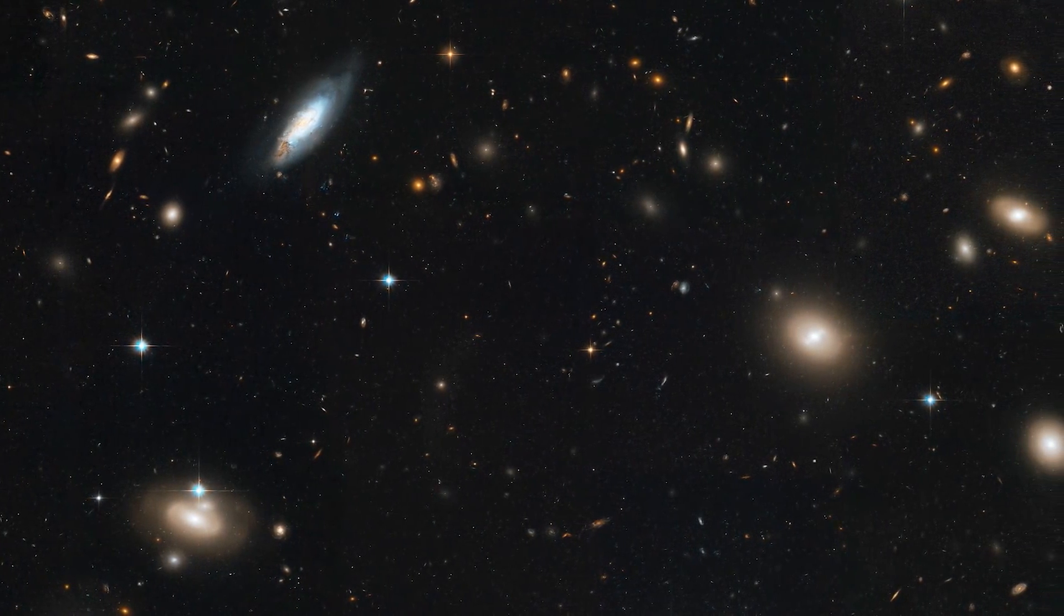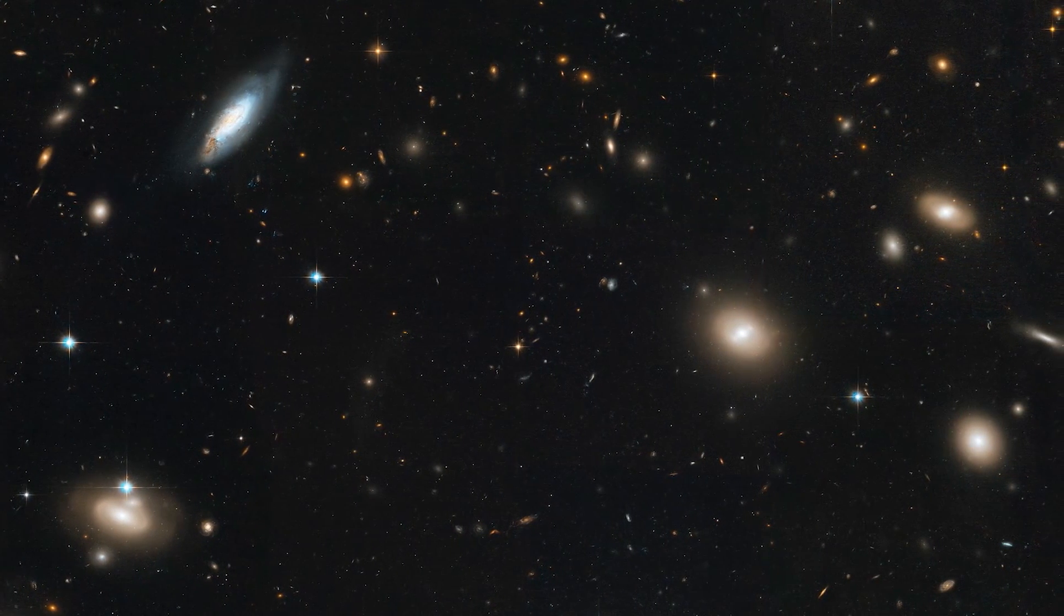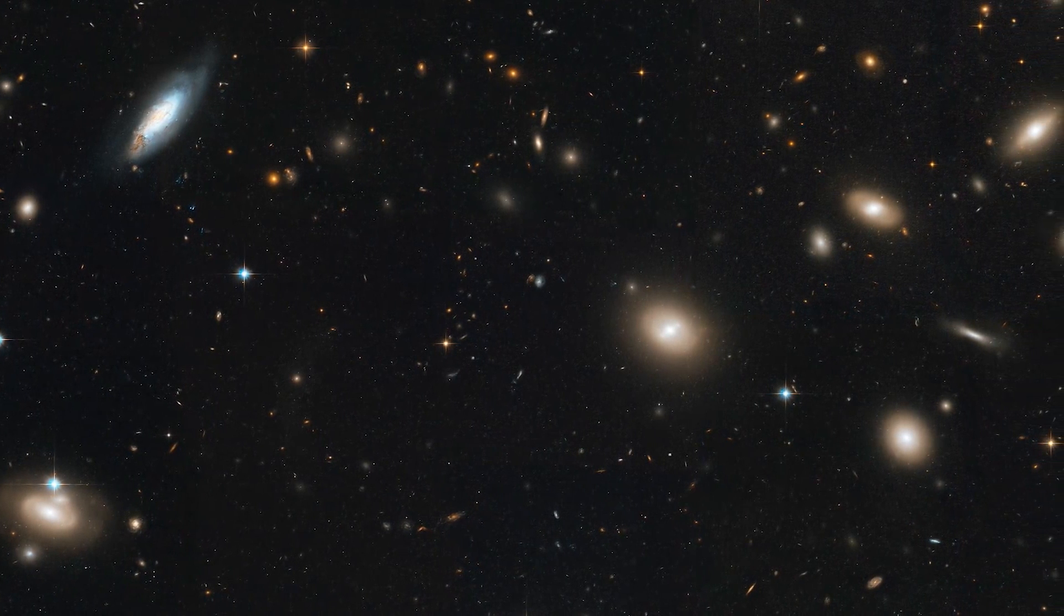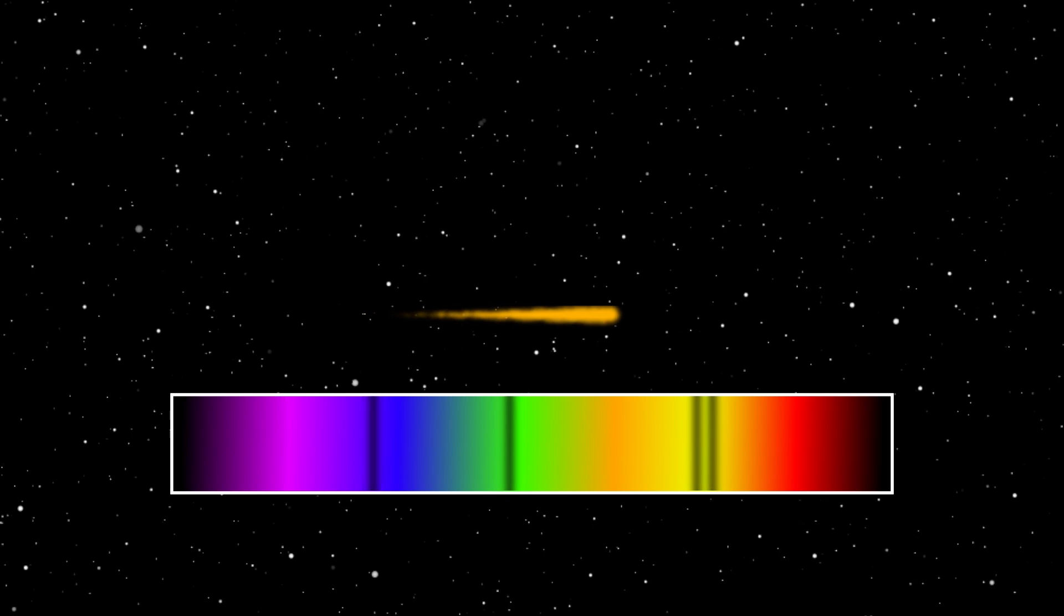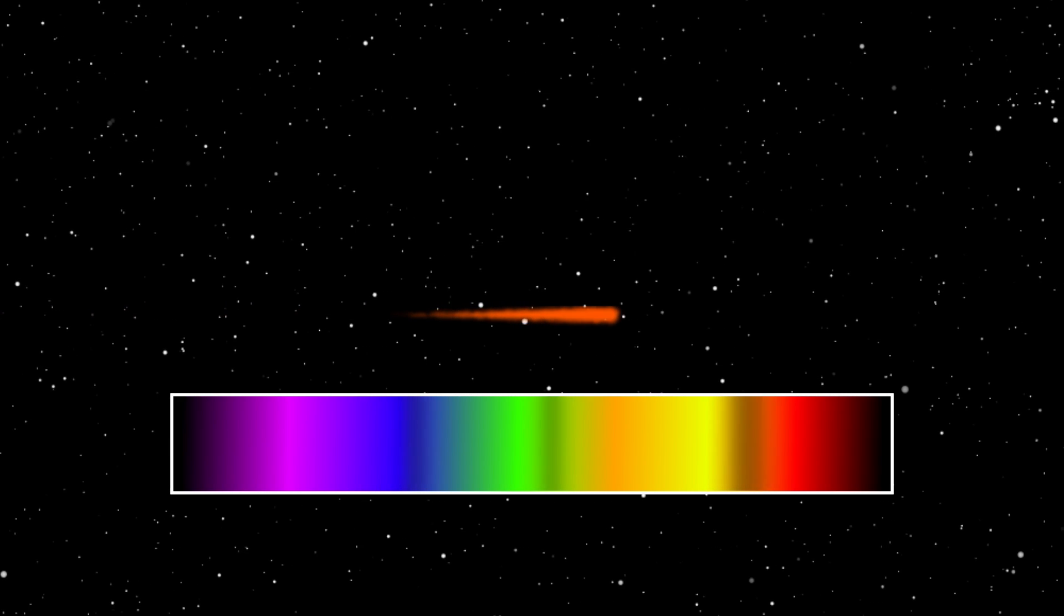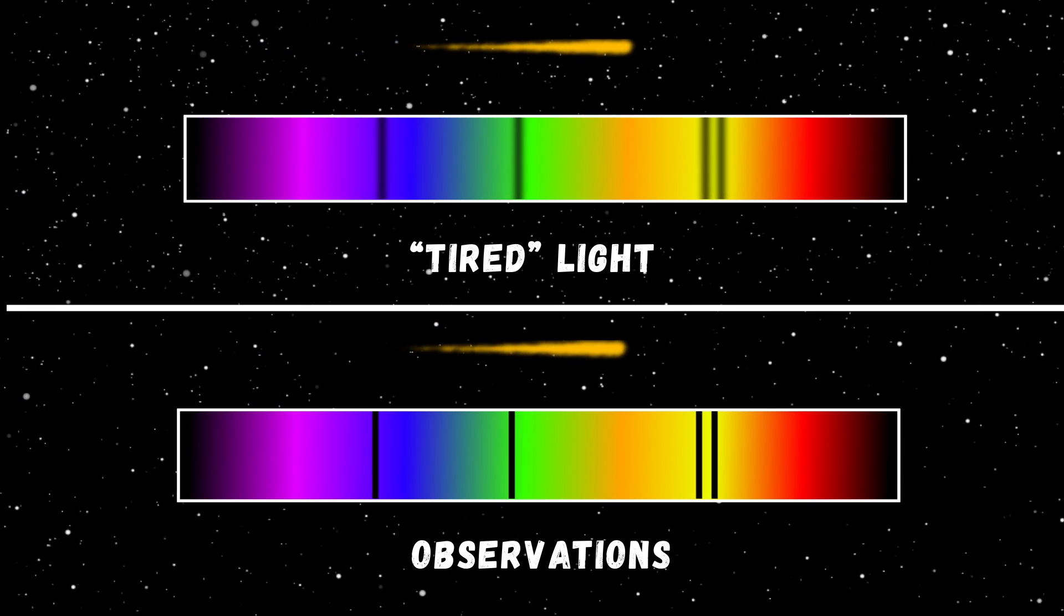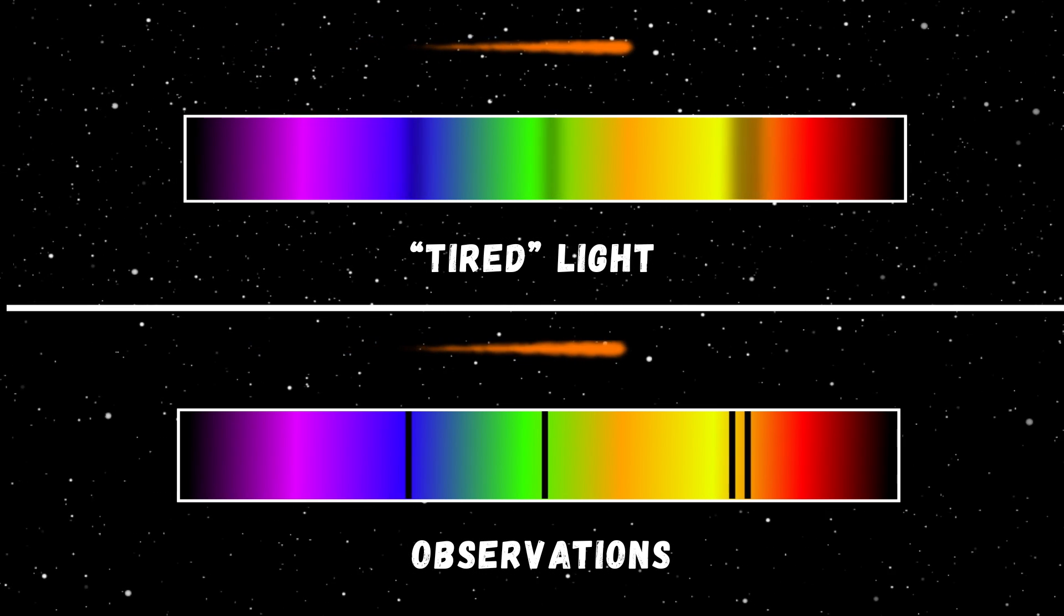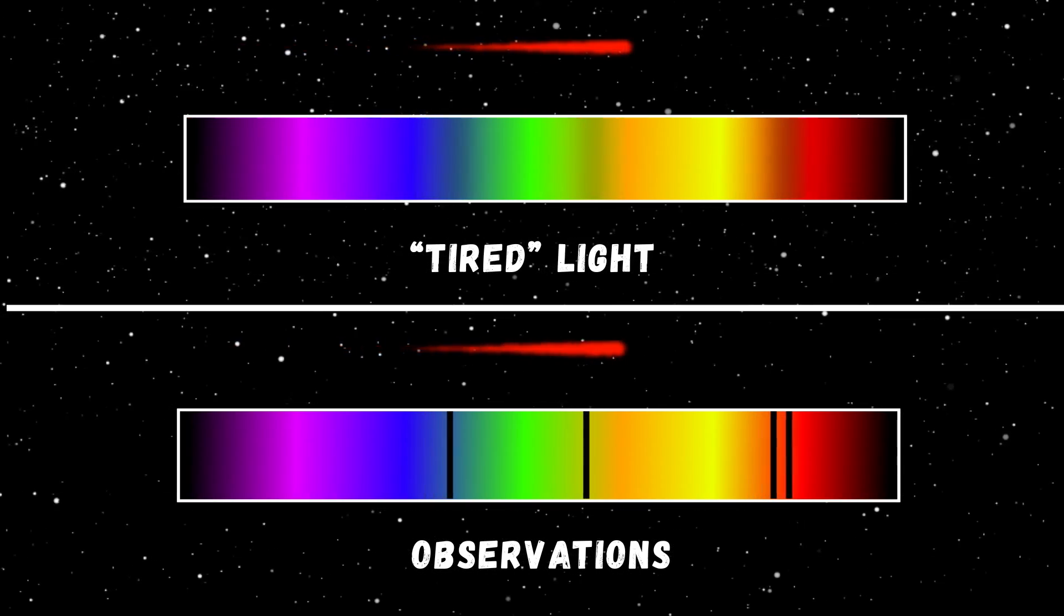All our observations of the intergalactic medium indicate that it is, first, extremely rarefied, containing approximately 1,000 atoms per cubic meter, and second, very cold. Secondly, Compton scattering would lead to a blurring of spectral lines, with the effect becoming stronger the farther the light source is from us. However, this does not happen. In the spectra of both nearby and very distant objects, spectral lines remain sharp and well-defined, shifting precisely as they should according to the law of redshift.